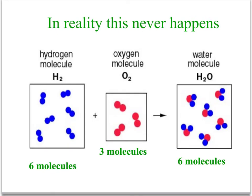In reality, this never happens. In most reactions that occur in nature or in the laboratory, we usually have one substance that is limiting and one that is excess. We usually do not have exactly the perfect ratio, and that's why limiting reactant problems are so important.